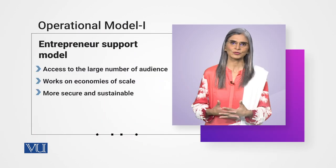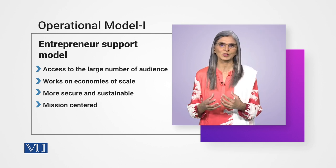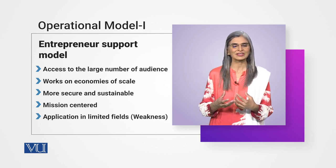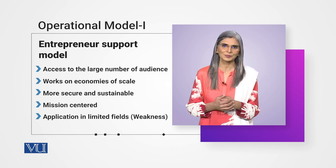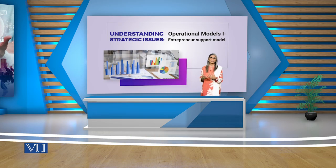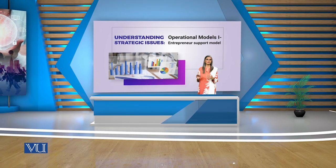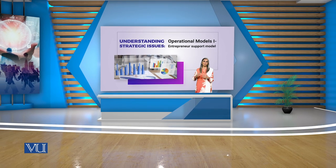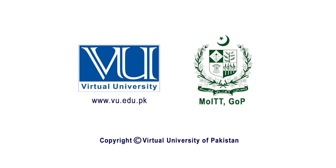Iski ek aur strength jo hai wo iska mission-centered hona hai — ki business mein olaj ke social enterprise apne mission ya social purpose ko nahi bholta. Ek weakness jo iski hai wo ye hai ki ye bohut hi mehdud fields mein applicable hai. Jaise economic development ki main baat ki — social entrepreneurship ka Entrepreneur Support Model jisme key element economic development hai. Wo individual small firms, lekin large number of individuals or small firms ko approach karta hai aur unko technical assistance ya financial services fraham karke unki development aur well-being ka jo purpose hai, apna mission hai, usko achieve karne ki koshish karta hai. Thank you.